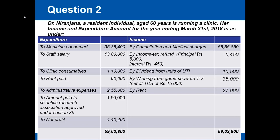On the expenditure side, she consumed medicines amounting to rupees 35 lakhs 38 thousand 400. She paid salary to staff of rupees 13 lakh 80 thousand, clinic consumables of rupees 1 lakh 10 thousand, rent of rupees 90 thousand, and administrative expenses of rupees 2 lakh 55 thousand. She also paid rupees 1 lakh 50 thousand to a scientific research association approved under section 35, resulting in a net profit of rupees 4 lakh 40 thousand 400.